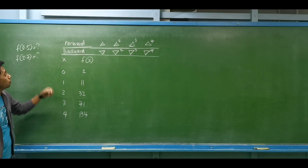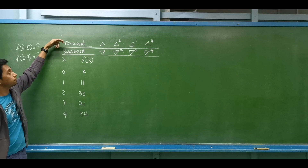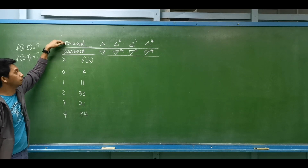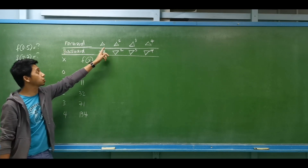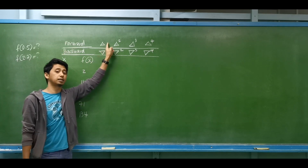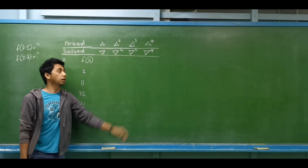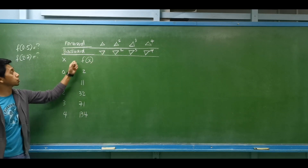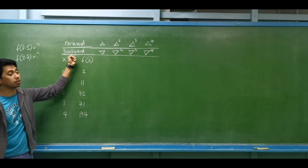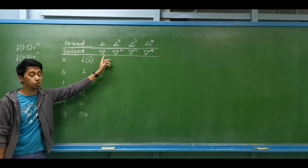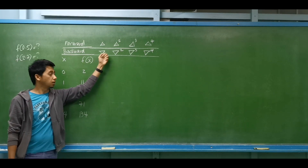If we are to use the forward method we use the symbol delta, but if we are to use the backward method we use the symbol nabla.